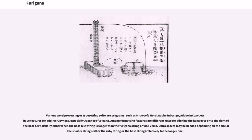Various word processing or typesetting software programs, such as Microsoft Word, Adobe InDesign, Adobe InCopy, etc., have features for adding ruby text, especially Japanese furigana. Among formatting features are different rules for aligning the kana over or to the side of base text, usually either when the base text string is longer than the furigana string or vice versa. Extra spaces may be needed depending on the size of the shorter string, either the ruby string or the base string, relative to the longer one.